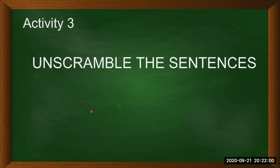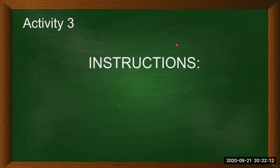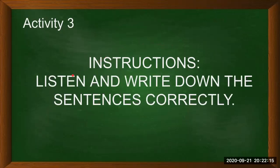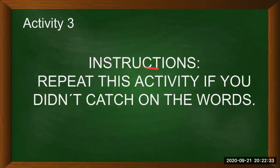Activity number three: Unscramble the sentences — Escribe correctamente las oraciones. Instructions: Listen and write down the sentences correctly — Escucha y escribe las oraciones correctamente. Repeat this activity if you didn't catch on the words — Repite esta actividad si no comprendiste las palabras.